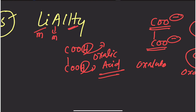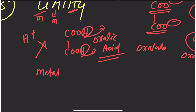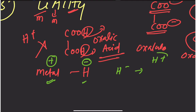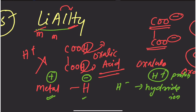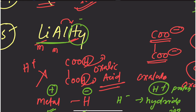LiAlH₄ example: Lithium is a group 1 metal with +1 charge. H is hydride (H⁻), charge −1. Metals are more electropositive than hydrogen, so hydrogen takes the negative charge as H⁻. There are 4 hydride ions giving −4 total. Li is +1, so Al must be +3 to balance: +1 + 3 + (4×−1) = 0.